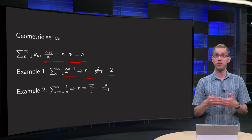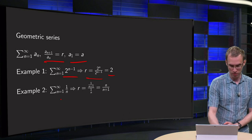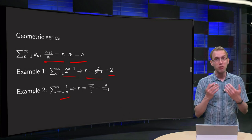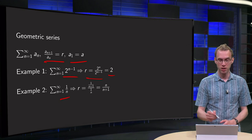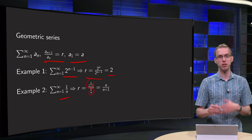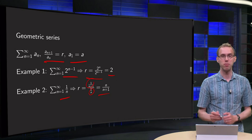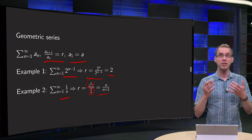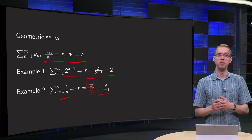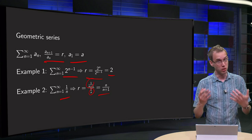If we take another series which looks really easy, like the one with 1 over n, if we now try to compute the ratio, we get 1 over n+1 divided by 1 over n. We can simplify it a bit to n over n+1, but this r just depends on n, which means that in this case this series is not a geometric series.